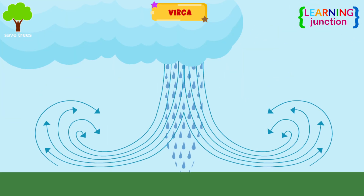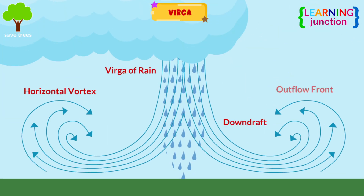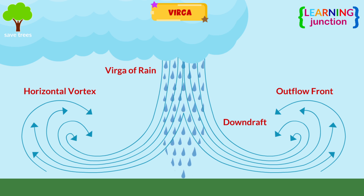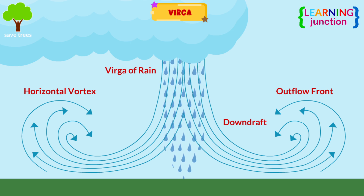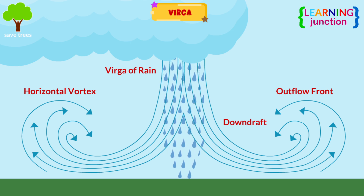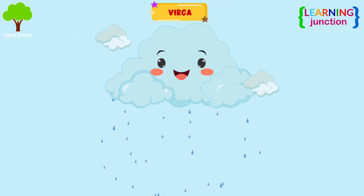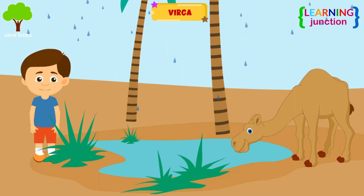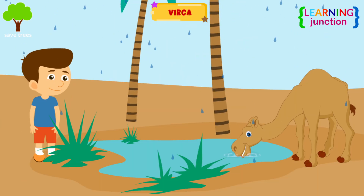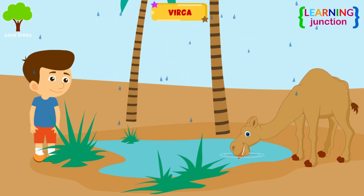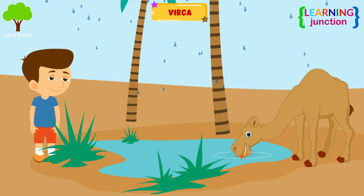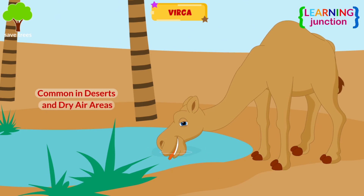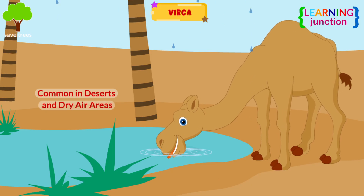Virga: in this form, rain falls from a cloud but evaporates before it reaches the ground. It looks like rain is falling from the sky, but it disappears because it falls through dry air. This is common in deserts and dry areas.